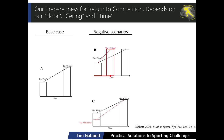A second negative scenario is when athletes come back from off-season poorly deconditioned, or they've been in rehab and haven't undergone enough loading while injured. In this case, the floor looks more like the basement — their capacity has dropped so far that it's a long way back to the ceiling. The slope of the line is also very steep, increasing the risk of injury and underperformance.